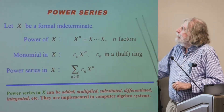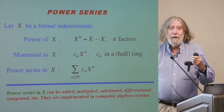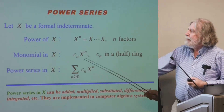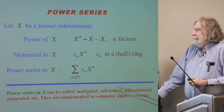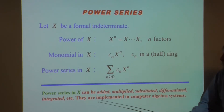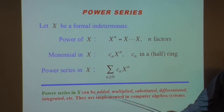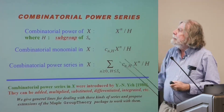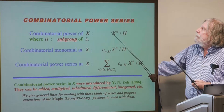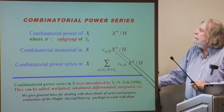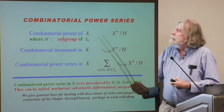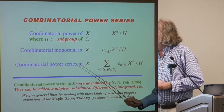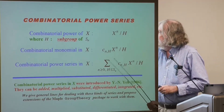Power series first. This is a power of X, this is a monomial in X — you multiply by a scalar — and this is a power series in X. It is very well known that classical operations on power series, including differentiation and integration, are implemented in computer algebra systems. But a more general concept is that of combinatorial power series. Instead of taking powers, you take formal expressions: a power of X divided by a subgroup of the symmetric group. This is a combinatorial power of X. A combinatorial monomial is a scalar multiple of a combinatorial power, and a combinatorial power series is a sum, possibly infinite, of combinatorial monomials.